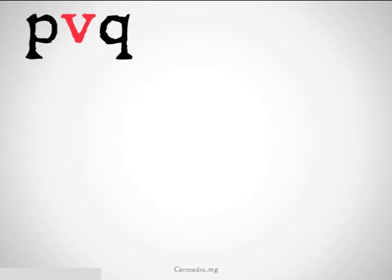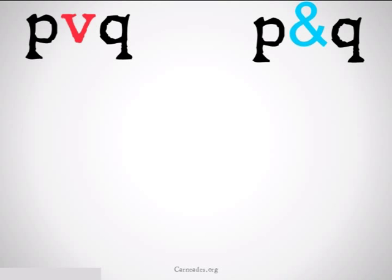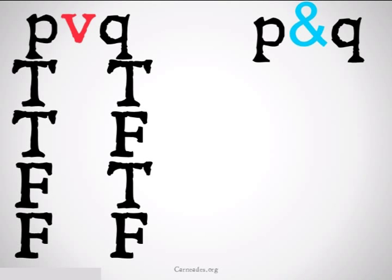Let's take a look at an example. Imagine we want to compare the proposition P or Q with the proposition P and Q. First, we'll do a truth table for the disjunction.